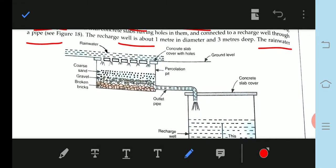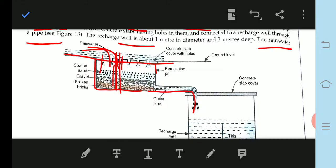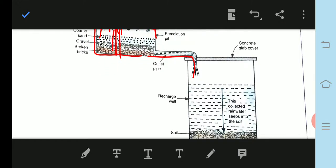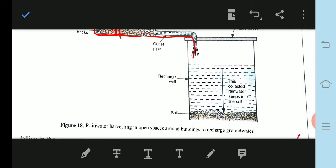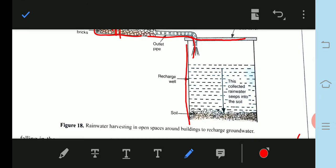In this way, we have pre-collection pits on top with a concrete slab which has many holes. The rainwater is then filtered through many layers by the outlet pipe. The recharge well is three meters deep and one meter wide.